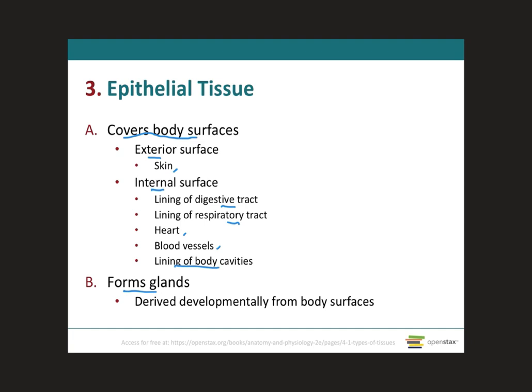We talked about the cranial, the thoracic, and the abdominal pelvic cavities. Those are all lined by epithelial tissue. Because glands derive developmentally from body surfaces, therefore you can see the link to the epithelial tissue as well.